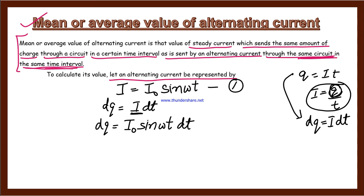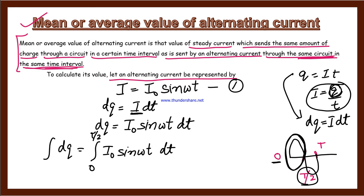Therefore, the charge sent by AC in the first half cycle: the first half means the positive portion, so the time ranges from 0 to T by 2, which is the half time period. So what we do is integrate both sides. We integrate dq from 0 to T/2, which equals I0 integral of sine omega t dt. I0 is a constant, so take it outside.